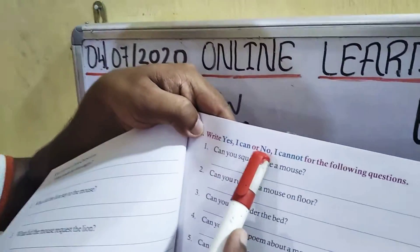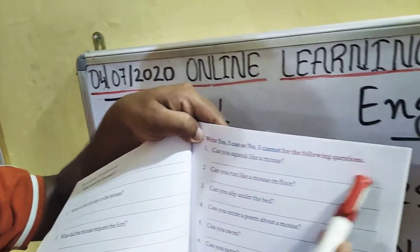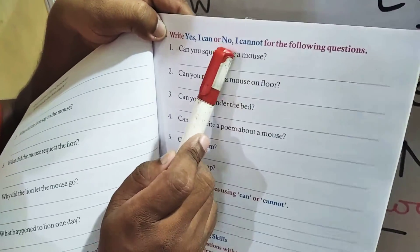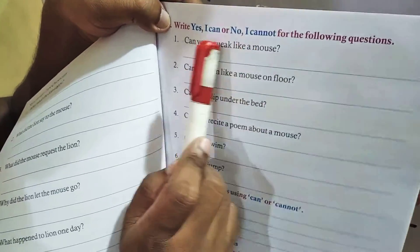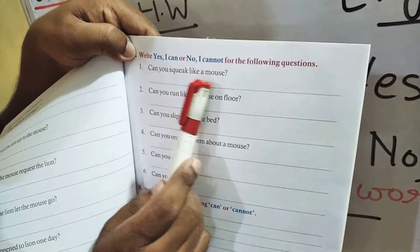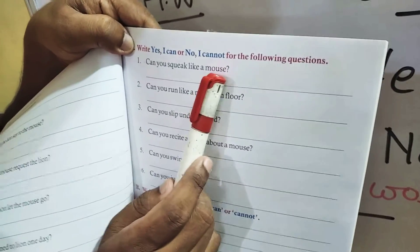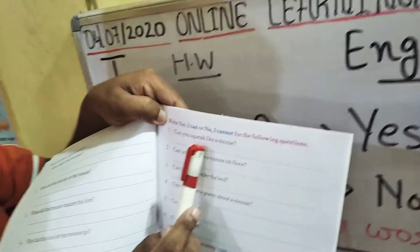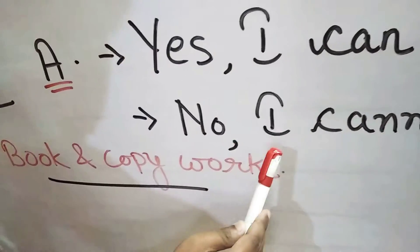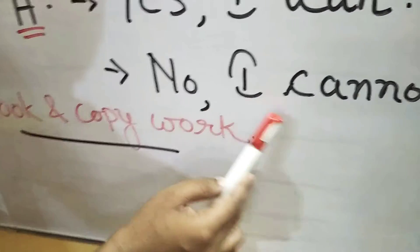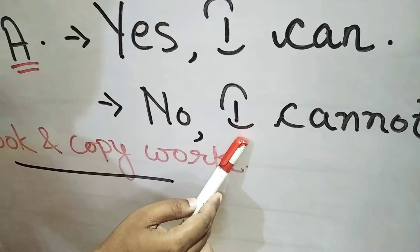Write Yes, I can or No, I cannot for the following questions. In each question, आपको Yes, I Can या फिर No, I Cannot से answer देना है। Number one: Can you squeak like a mouse? क्या आप mouse की तरह squeak कर सकते हैं? नहीं कर सकते हैं तो आप लिखेंगे: No, I Cannot — capital I, comma, I Cannot.